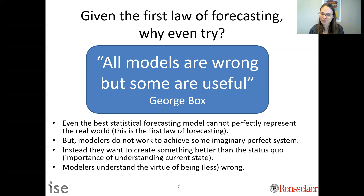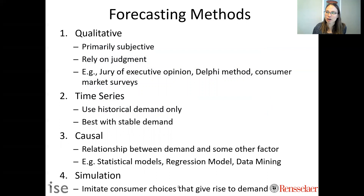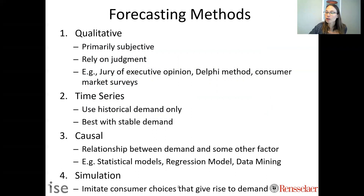So how can we be less wrong? We can use different methodologies. In general, we can think about them in four categories. The first is qualitative — for example, getting a group of people together and asking them questions, like a focus group. There are many more sophisticated qualitative approaches, though we're not going to study them in this class.